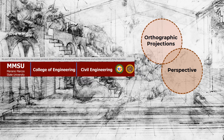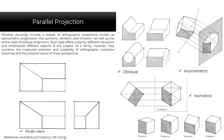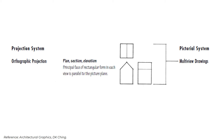Orthographic Projections and Perspective Drawings. Parallel drawings include a subset of orthographic projection known as axonometric projections: the isometric, diametric, and trimetric, as well as the entire class of oblique projection. Each type offers a slightly different viewpoint and emphasizes different aspects of the subject. They combine the measured precision and scalability of orthographic multi-view drawings and the pictorial nature of linear perspective. In this slide, you can see the multi-view drawings, the oblique, axonometric, and the isometric — the projection system.